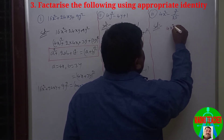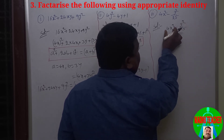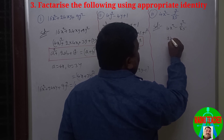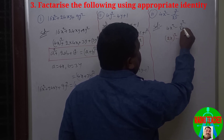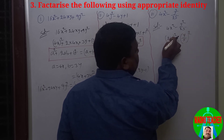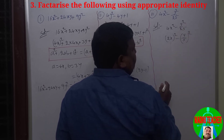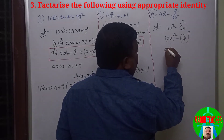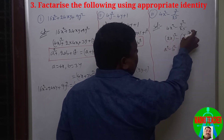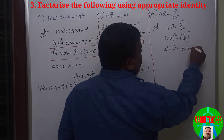Third, 4x² − y²/25. Write the first term as (2x)² and the second term as (y/5)². It is in the form of a² − b² = (a+b)(a−b). Comparing, a equals 2x and b equals y/5.